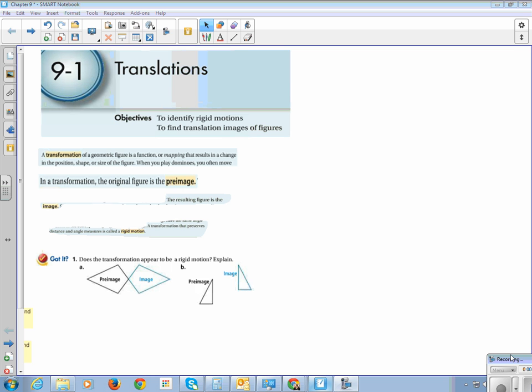There's a lot of new vocabulary in this section. The first vocabulary word that we're going to be looking at is transformation. A transformation of a geometric figure is a function or mapping that results in a change of position, shape, or size of the figure. In a transformation, the original figure is called the pre-image, and then the resulting figure is called the image. We have a pre-image, which is what we had before, and then an image, which is what we get when we apply our transformation.